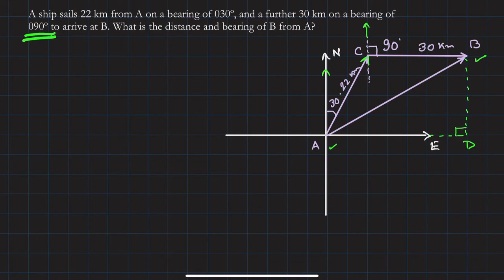You have to find out the length AB, and you also have to find out the bearing of AB — that means finding angle NAB. Let's call this angle theta, which is unknown. This is the bearing of B from A. So let's start solving.